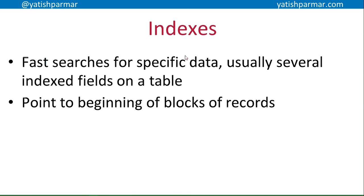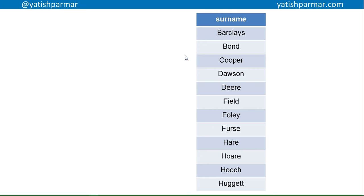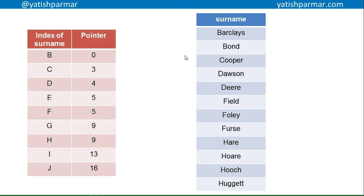Following on from that, you may remember we talked about indexes — for example, index sequential records — for fast searches for specific data. If you've got millions of records in a database table and want to find something quickly, you don't want to start at the beginning and search all the way down. You want to jump to a certain block. For example, with a surname field, the index might let you jump to the position for surnames beginning with 'B' or 'F' and search from there, speeding up the process.